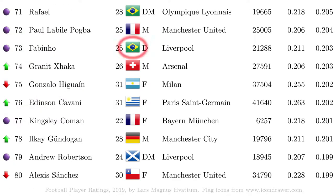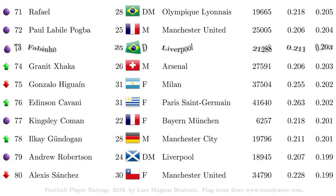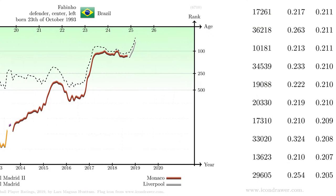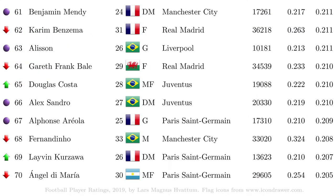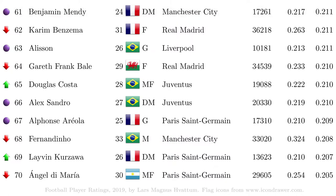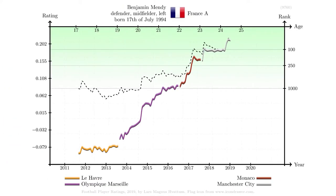Brazil is the country with the most players in the top 100, which is as expected. Fabinho, at number 73 in the list, is only ranked number 16 out of 18 players from Brazil. The club with the most players in the top 100 is Manchester City. Benjamin Mendy, at number 61 overall, is only ranked number 14 out of 16 players from Manchester City.